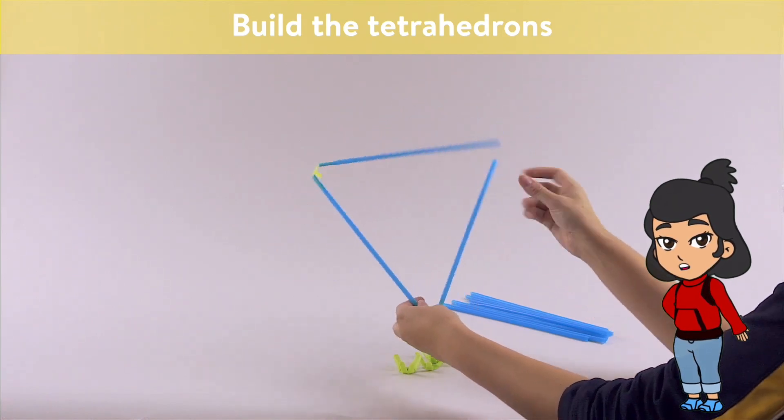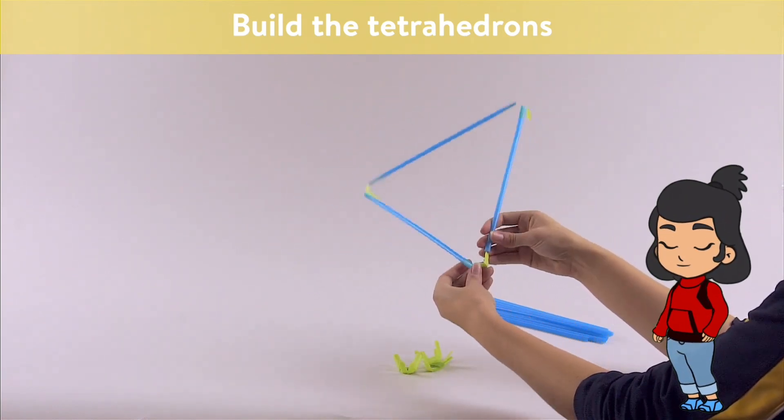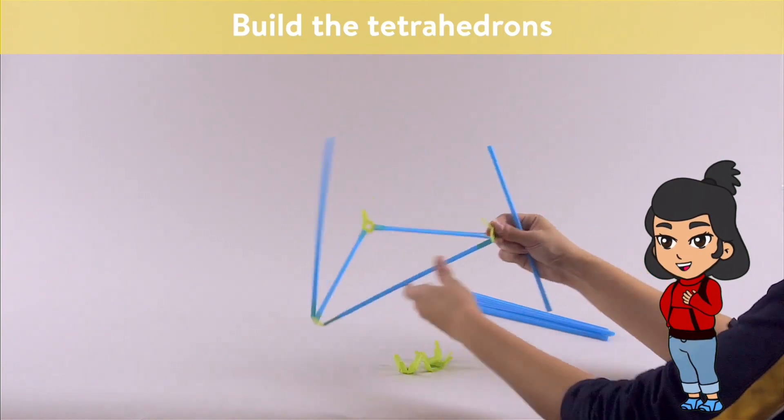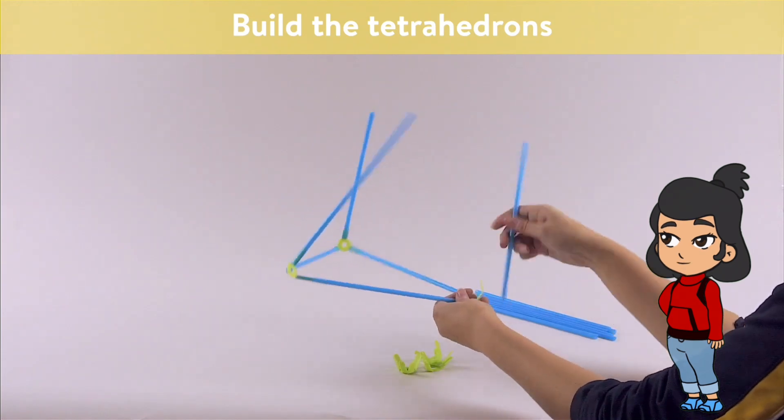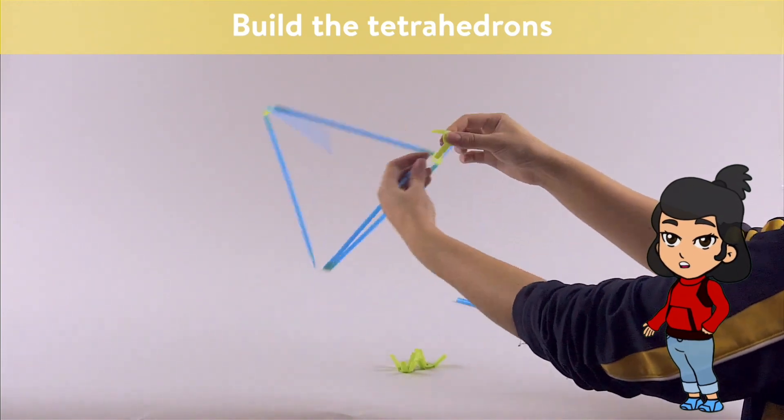Step 2, repeat this for all three connectors. Step 3, for the final step, connect the remaining connector to these straws, turning our 2D triangles into a 3D triangle.